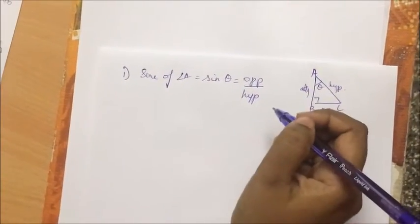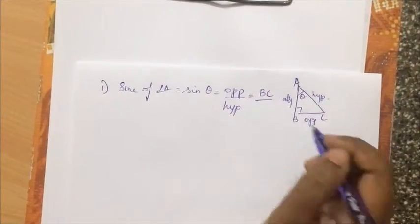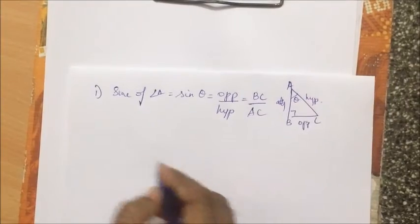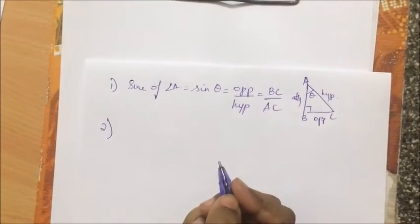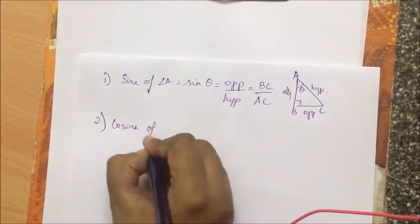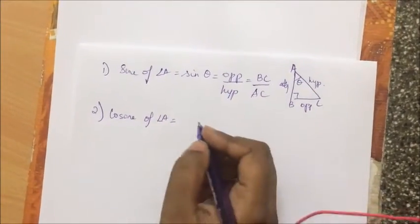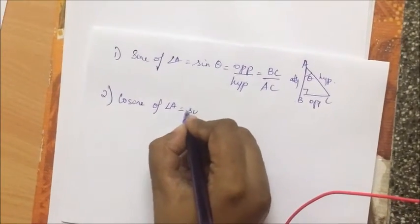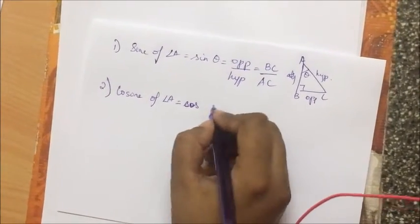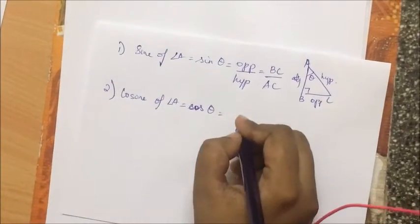The ratio of the opposite side to the hypotenuse, which in this case is BC by AC. Now the second ratio is called the cosine of angle A. Just to keep it simple, I am always using angle A. So cosine of angle A, in short form cos theta, is the adjacent